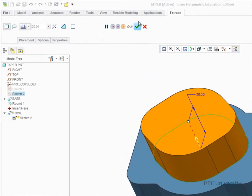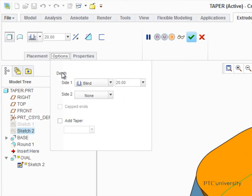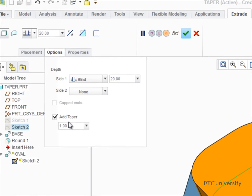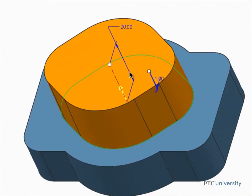You can enable the Add Taper option from the Options tab of the Extrude dashboard. As soon as the option is enabled, a dimension controlling the angle of the taper is added to the feature.